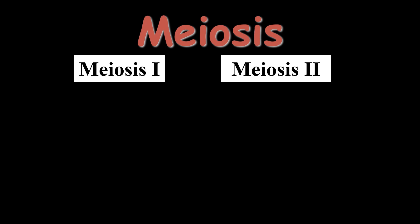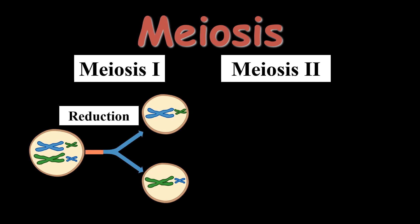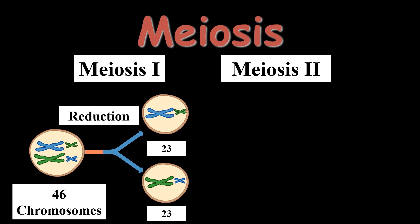To understand the complete mechanism of meiosis, it is divided into two stages: Meiosis 1 and Meiosis 2. Meiosis 1 is also known as the reduction phase, in which one parent cell gives rise to two daughter cells. It is known as reduction because the number of chromosomes is reduced from 46 to 23. The parent cell contains 46 chromosomes, and each daughter cell will contain 23 chromosomes, which is half of that of the parent cell.